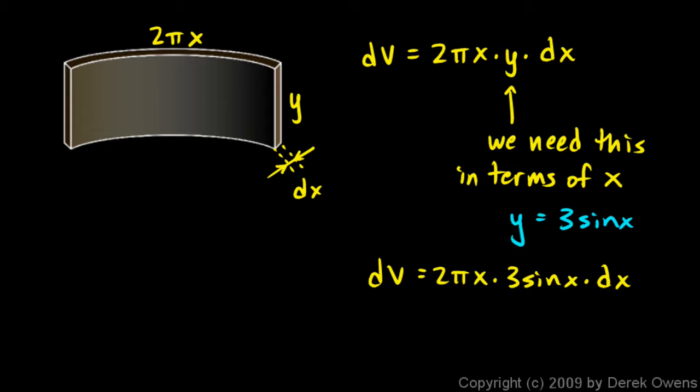And I need to integrate that from 0 to 2. So you can see my constants here, I've got a 2 pi times a 3, so I'm going to write the volume is the integral. Well, I'm going to bring the constants out front. The volume is 6 pi times the integral from 0 to 2 of everything else in here, that's going to be x sine x dx.